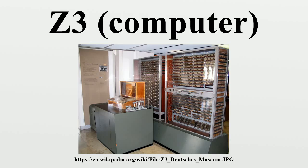Zuse moved on to the Z4 design, which was built days before the war ended. The Z3 is a universal Turing machine. It was possible to construct loops on the Z3, but there was no conditional branch instruction. Nevertheless, the Z3 was Turing-complete. How to implement a universal Turing machine on the Z3 was shown in 1998 by Raoul Rojas.